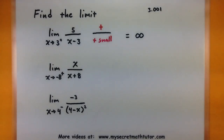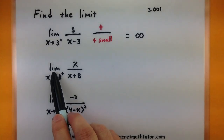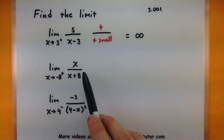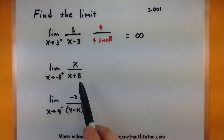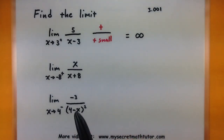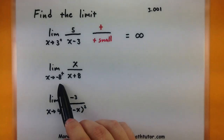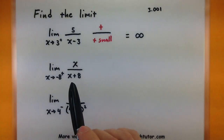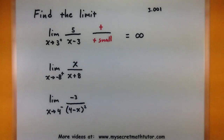Let's do another one. We want to know the limit as x approaches negative 8 from the right of x divided by x plus 8. Again, if I try to directly substitute negative 8 for x, I get zero on the bottom and it's undefined. So there's our clue that we're probably looking for a limit that goes to infinity or negative infinity.